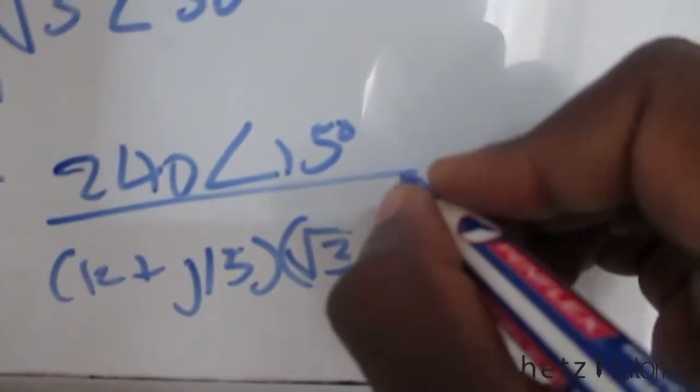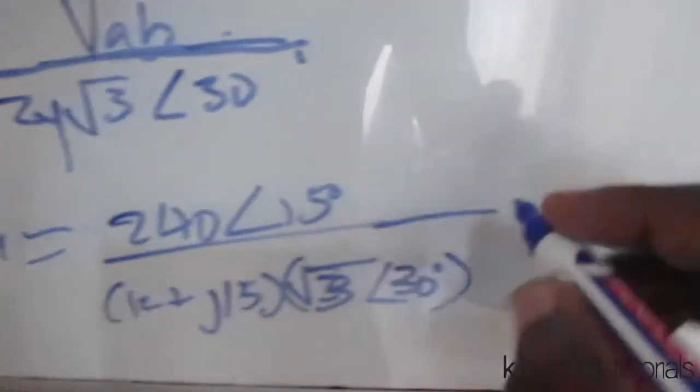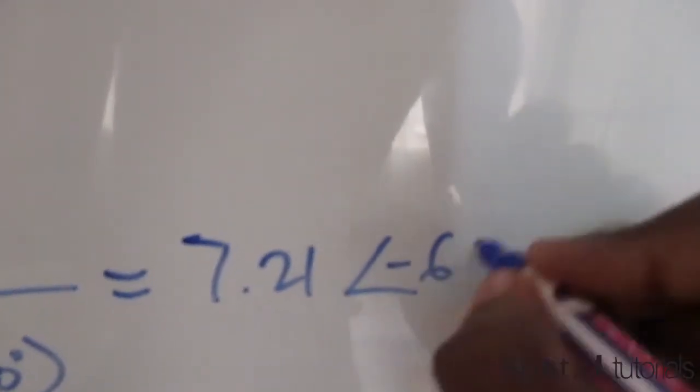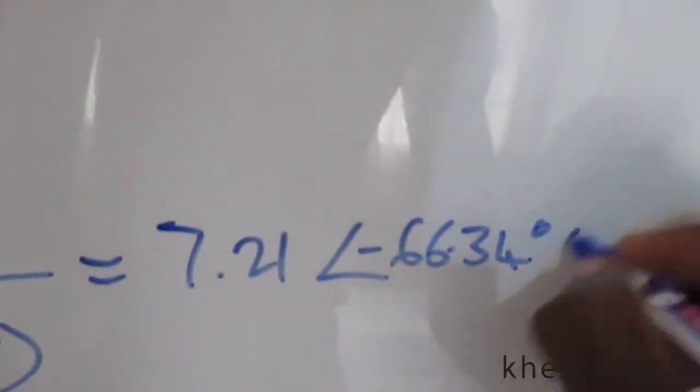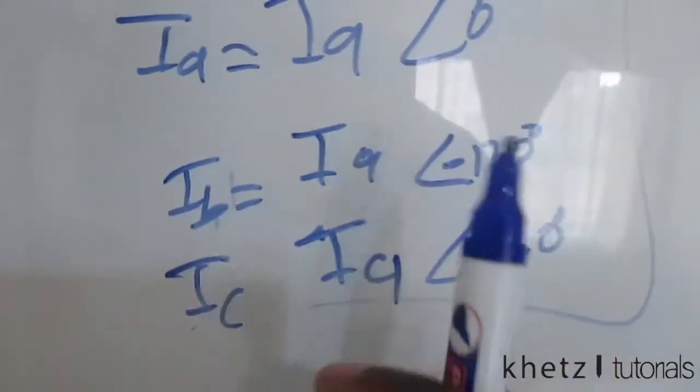Still at the bottom, so the sign doesn't change. Just punch this into your calculator and you should get a value of IA of 7.21∠-66.34° amperes.